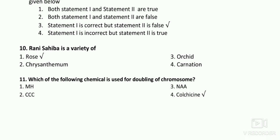Which of the following chemical is used for doubling chromosomes? The answer is colchicine. Remember the formula: C₂₂H₂₅NO₆. Colchicine doubles chromosomes by preventing microtubule formation during cell division.